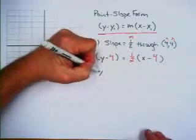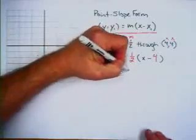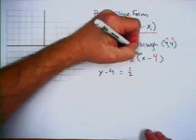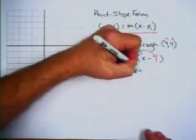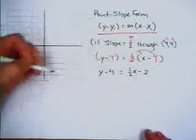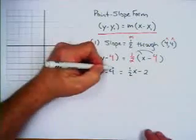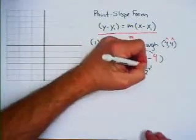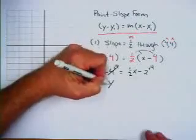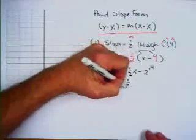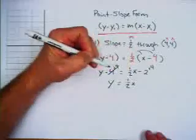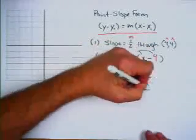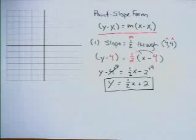So what we have now is y minus 4 equals one-half x, and if we distribute that, we get one-half x minus 2. Then if we add 4 to both sides, that gives us y equals one-half x plus 2 — the equation of the line in slope-intercept form.